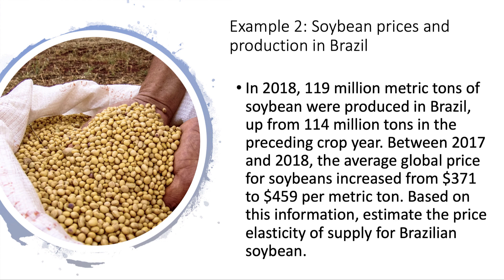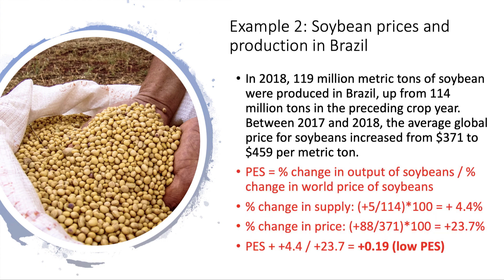Our second example takes us to Brazil and the changing price of soybean. In 2018, we're told that 119 million metric tons of soybean were produced in Brazil — it must be one of the world's biggest producers — and that was up from 114 million tons in the preceding crop year. Between 2017 and 2018, the average global price for soybeans increased from $371 to $459 per metric ton. Based on this information, estimate the price elasticity of supply for Brazilian soybean.